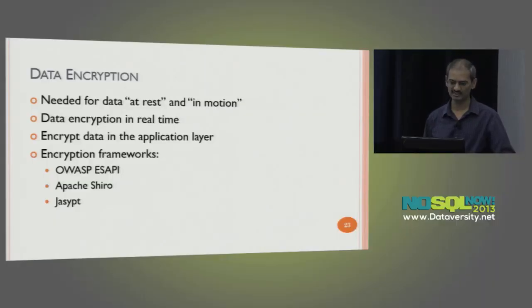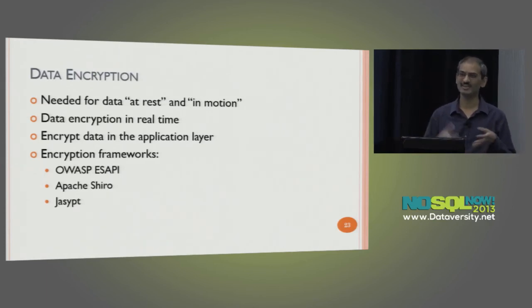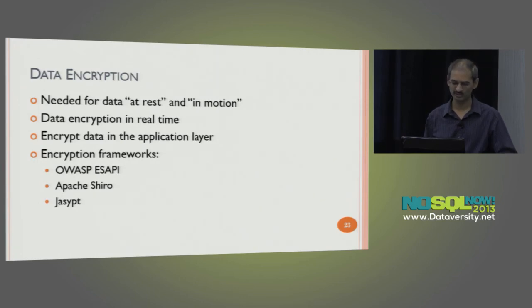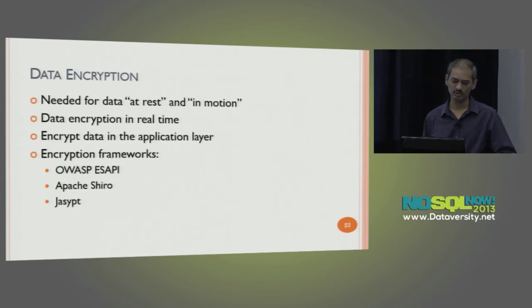For data encryption, we need it both at rest and in motion. We want to do encryption in real time — you don't want to store data and then encrypt it later, because someone might get the data today and use it in plain text. One option is to encrypt in the application layer, since that's when you create or modify data. Some relational databases offer built-in encryption. Open source Java frameworks for encryption include OWASP ESAPI, Shiro, and Jasypt — I have used all three in previous projects.